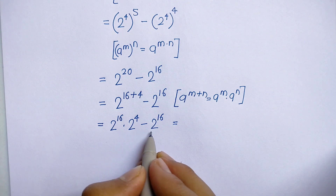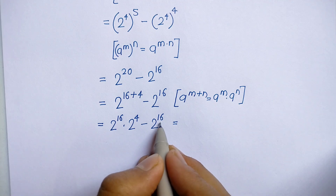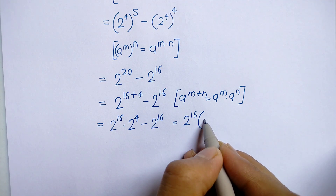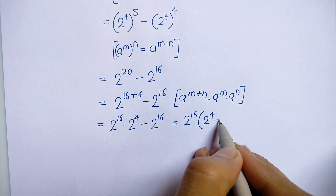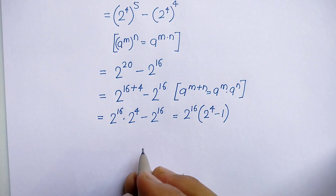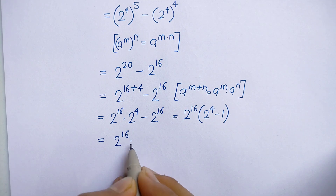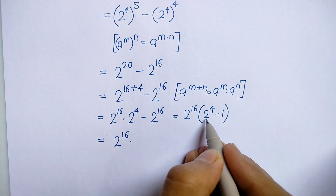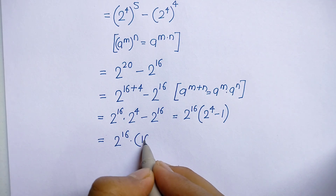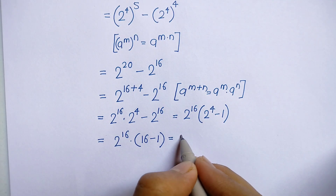From this expression, we can take out 2 to the power 16 as a common factor. So we get 2 to the power 16 in bracket, 2 to the power 4 minus 1.